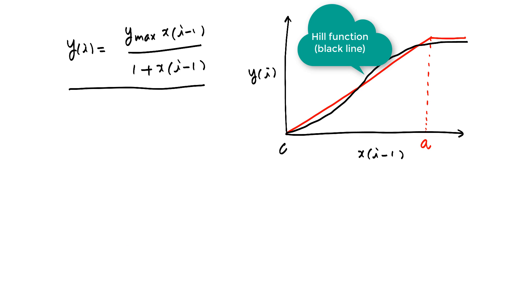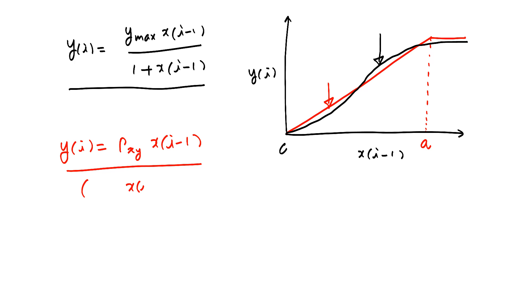So here we have nonlinear time invariant difference equation we saw previously. And that function is Hill function, which is shown in black. And now I want to approximate this Hill function using difference equation that we saw previously. So Y of I is equal to PXY X of I minus 1. Now, this linear time invariant difference equation can be used to represent this red line shown here, when X of I minus 1 is between 0 and A.